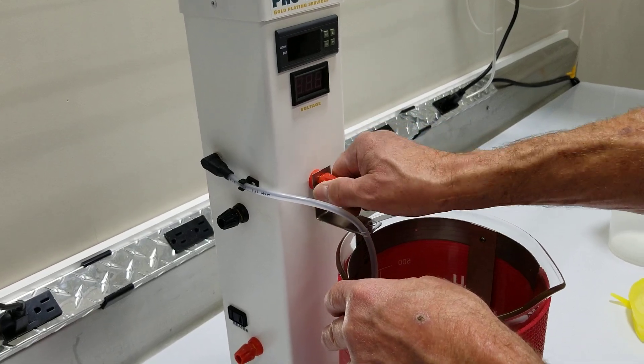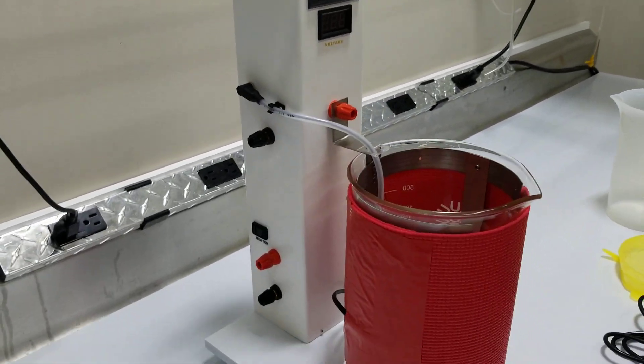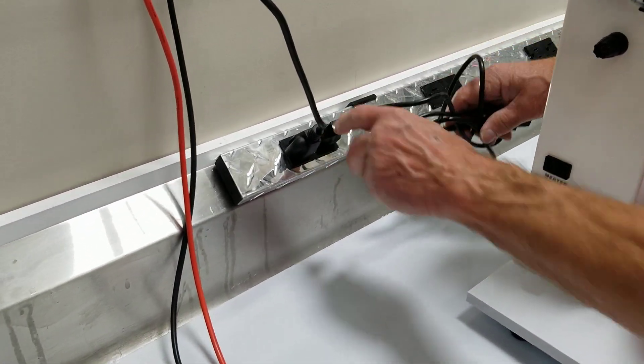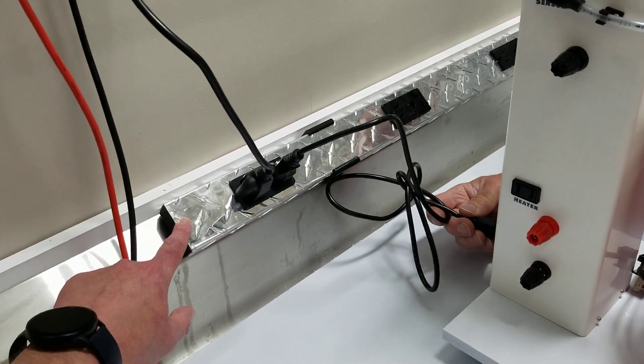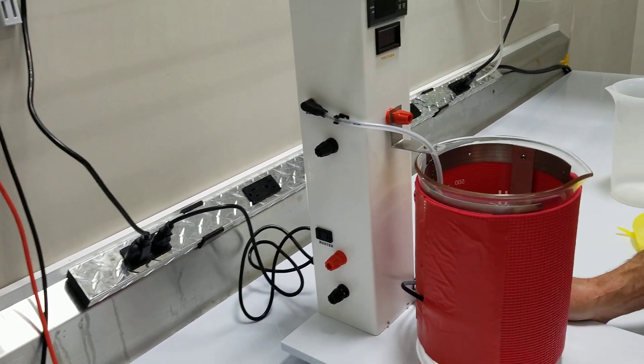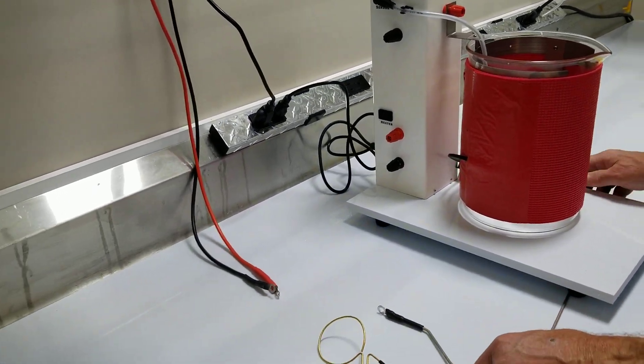Once you have that nut secured, you can next plug in your power cord into the back. Here we have this power strip. It is nice to have access to multiple plugs because when you have multiple stations, you're going to have multiple plugs that need to plug in.